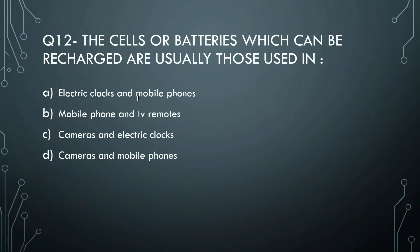Next question: cells or batteries which can be recharged are usually used in which devices? Some cells and batteries cannot be recharged - once used, they are replaced. But some can be recharged and used again. The options are electric clock, mobile phones, TV remotes, cameras, or cameras and mobile phones. The right answer is cameras and mobile phones - these use rechargeable batteries.